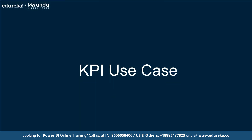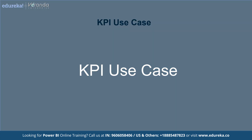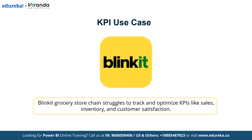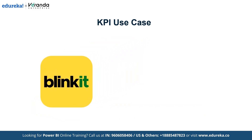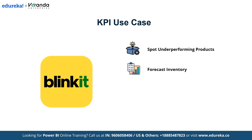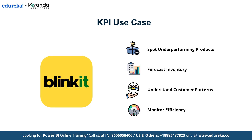In this video we consider Blinkit's example, showing how Blinkit made use of KPIs in Power BI. The Blinkit grocery store chain faces challenges in tracking and optimizing key performance indicators such as sales trends, inventory levels, and customer satisfaction. Decision makers are struggling with identifying underperforming products, forecasting inventory needs to avoid overstocking or stockouts, understanding customer buying patterns, and monitoring operational efficiency across different stores.